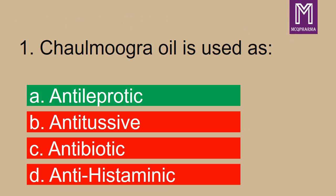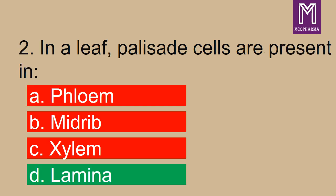Question number one: Chaulmugra oil is used as? Correct answer: anti-leprotic. Next, in a leaf, palisade cells are present in? Correct answer: option D, lamina.